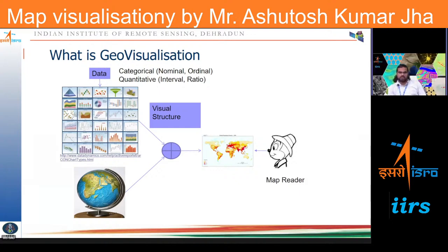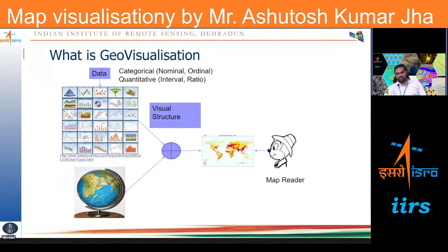In geo-visualization techniques, you have a dataset that is either categorical or quantitative, and you map it with an appropriate visual structure taking the context of geospatial locations. Finally, you put it in a two-dimensional space — though three-dimensional space is also available, today we are restricting ourselves to 2D representations. The map reader sees the final product and starts questioning and reasoning about what information is being conveyed.